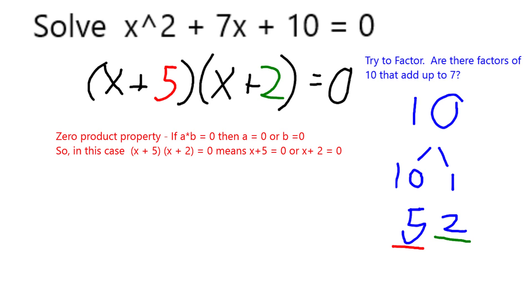Now I can apply my zero-products property which tells me that, because the whole thing is 0, either x plus 5 or x plus 2 must equal 0.